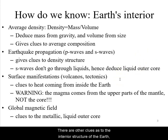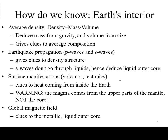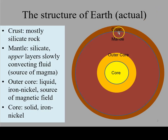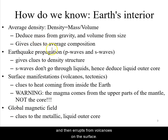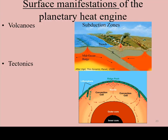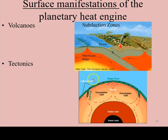There are other clues as to the interior structure of the Earth, including surface manifestations. Volcanoes do not spew lava from the core of the Earth; it is actually from the upper layers of the mantle that magma forms and then erupts in volcanoes on the surface. Tectonics — specifically on the planet Earth, plate tectonics — give another clue. Both of them indicate that the interior of the Earth is hot, and that heat is trying to convect to the surface and then radiate into space.